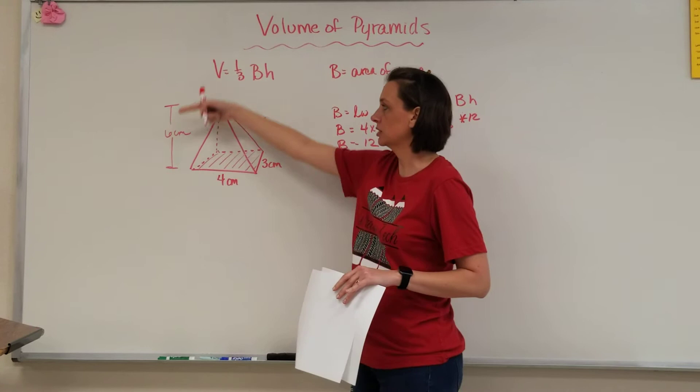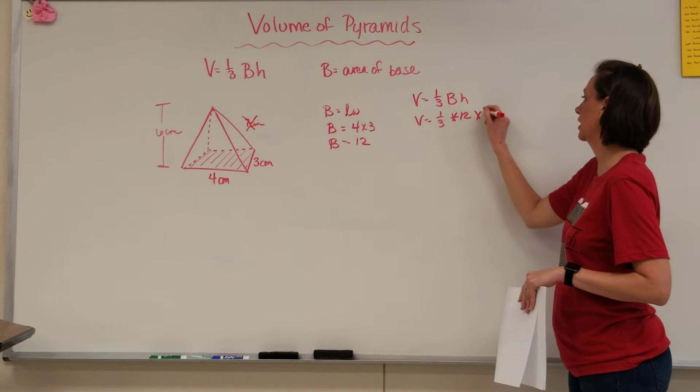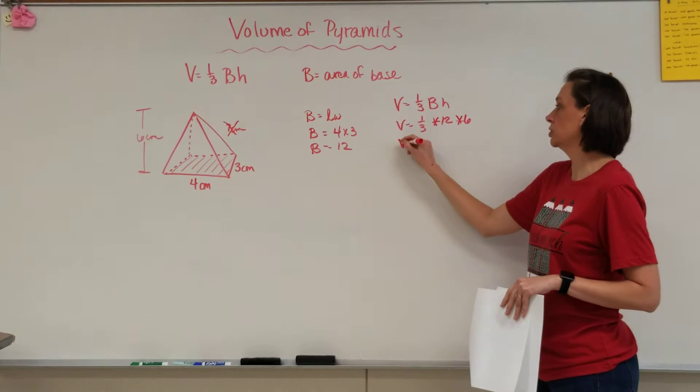So in this case, we're going to say times 6 for the height of the entire pyramid. When you're going through this, you can work left to right because it's all multiplication. Sometimes one of these numbers might be easier than another to divide by 3.